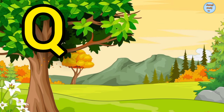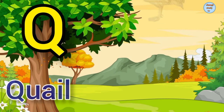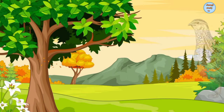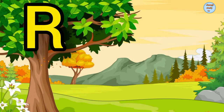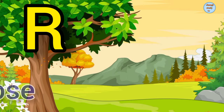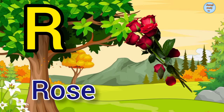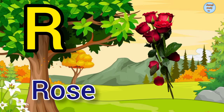Q. Q for quail, quail means bater. R. R for rose, rose means gulab.